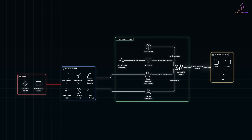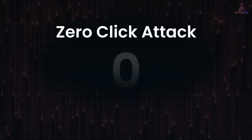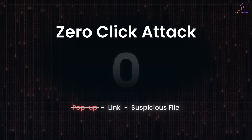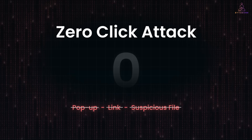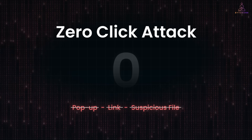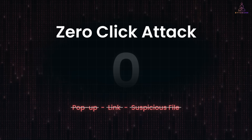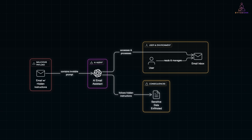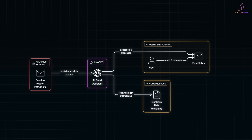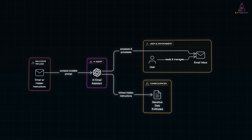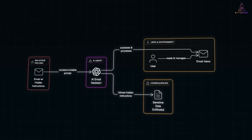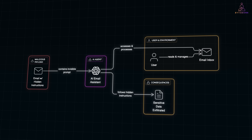Zero-click and AI-driven attacks aren't going away anytime soon. But staying updated, limiting access, and using trusted platforms like Clerk gives you a serious advantage. The scary part about zero-click attacks is how invisible they are — you don't get a pop-up, a link, or even a suspicious file. Everything looks normal until it's not. And now, with AI agents that can read your emails, analyze data, and even make decisions, that invisibility becomes an amplifier. These systems are powerful, but power without guardrails turns convenience into vulnerability.